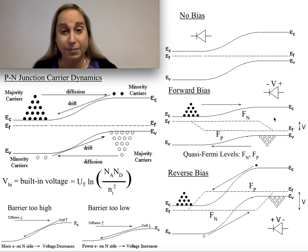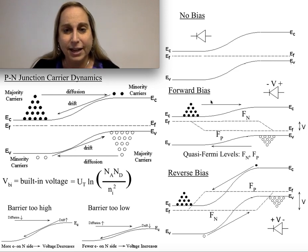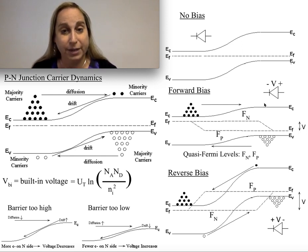In terms of shrinking the barrier, that means I've got more carriers that can diffuse across. And it's exponentially more current carriers because the barrier has decreased by an exponential amount. And that changes things.